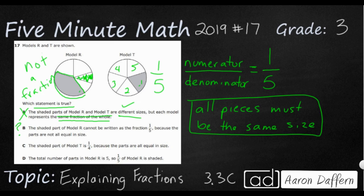As always, before we select it, let's look at C and D because if either of those give us pause, we might need to go back and look at B again. C, the shaded part of model T is one-fourth because the parts are all equal in size. Well, the parts are all equal in size, but this is incorrect.